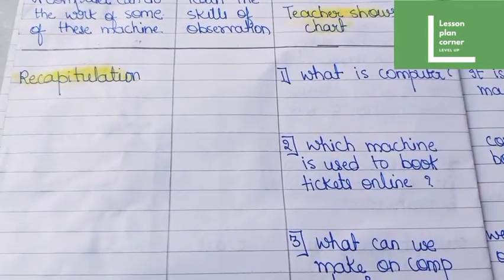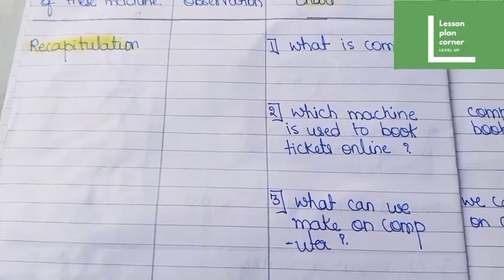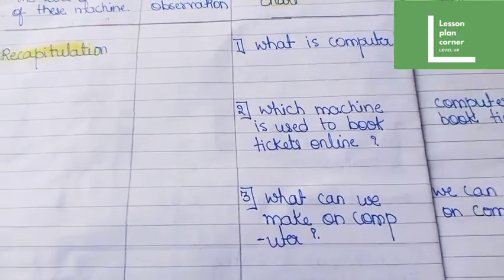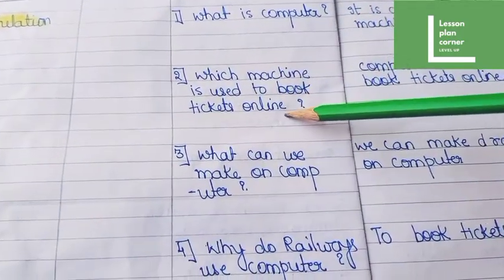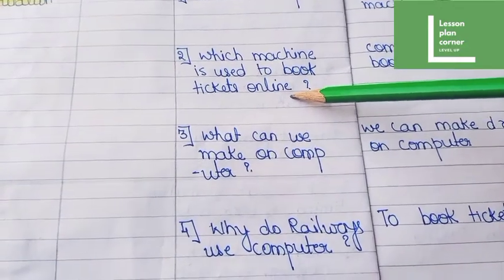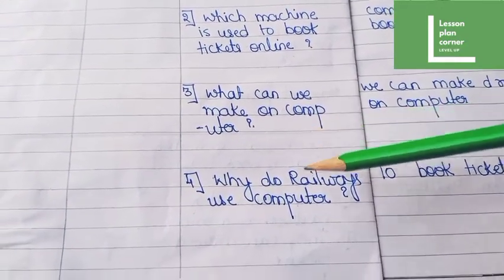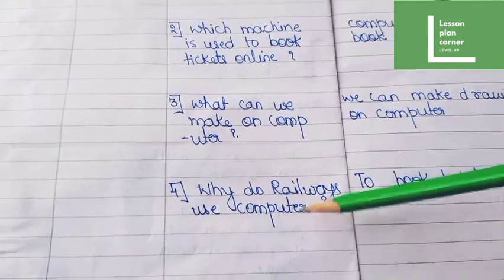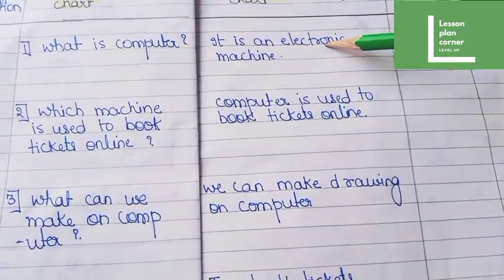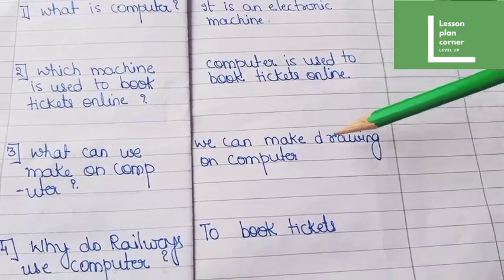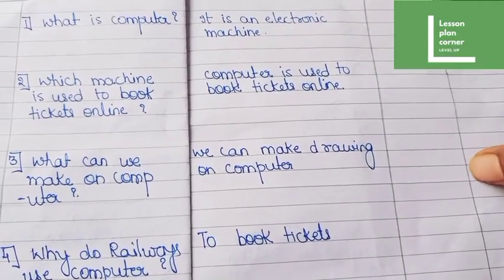Here you can see the recapitulation section. We have to ask a series of questions: What is computer? Which machine is used to book tickets online? What can we make on computer? Why do railways use computer? And here are the expected answers that we expect from students.